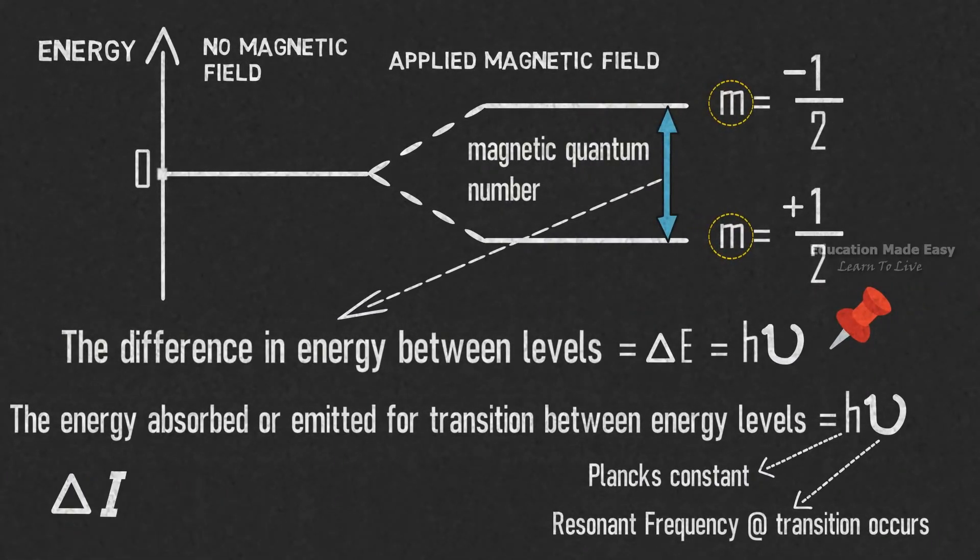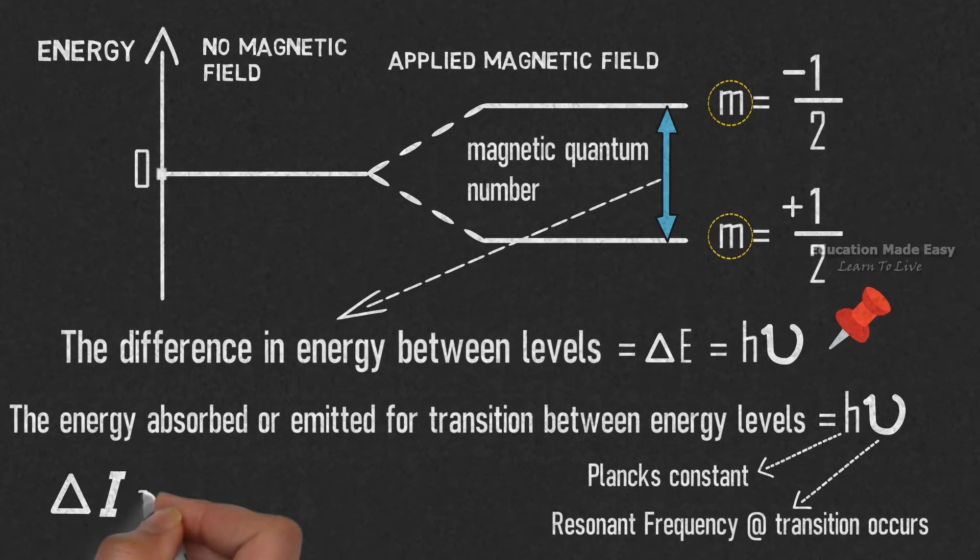Thus, change in spin ΔI is equal to minus 1/2 minus plus 1/2, which is equal to minus 1.